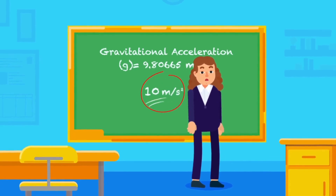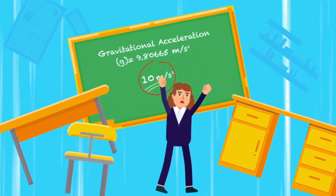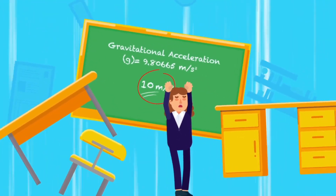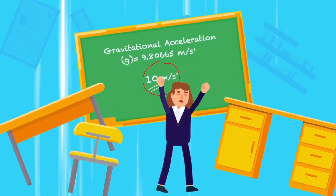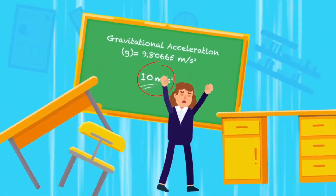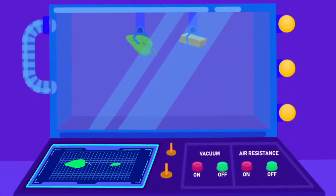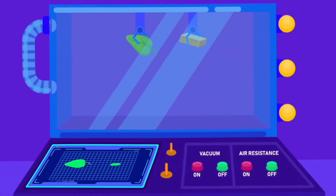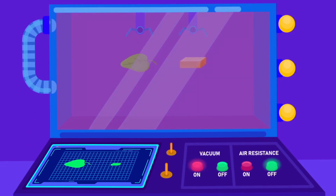The gravitational acceleration is the same for all objects, irrespective of their size or mass. In a vacuum, where there is no air, the acceleration takes full effect, resulting in objects experiencing a freefall.